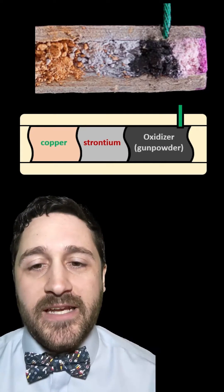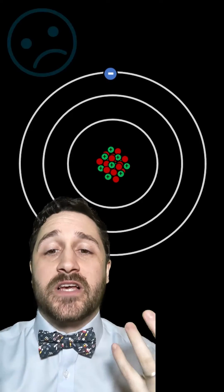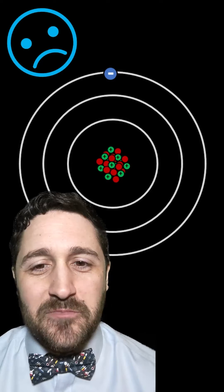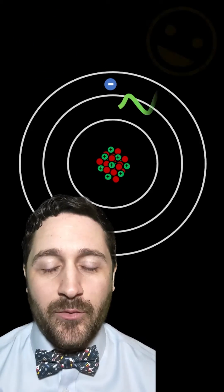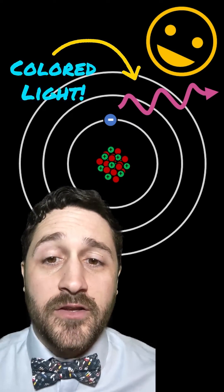When you ignite a firework, when that explosion goes off, energy from the explosion is transferred to the electrons in that metal. The electrons jump up to higher energy levels, where they don't really like to be, and they drop back down to get back to where they came from. And in doing so, they have to release that excess energy, and they do so as coloured photons, or coloured light.